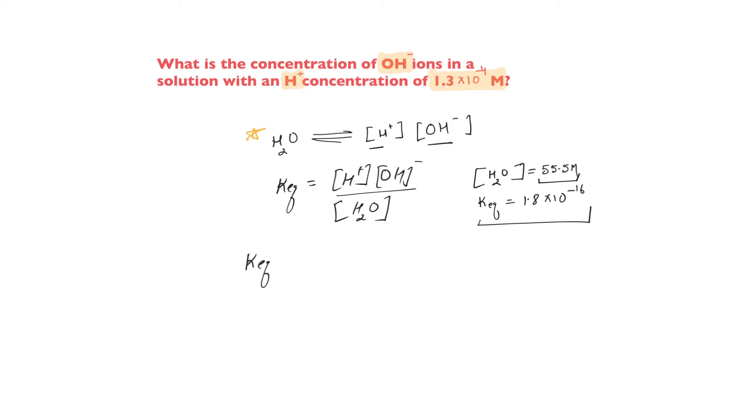K equilibrium multiplied by water concentration, the value which we know, equals H plus OH minus ion product and this specific number is KW.